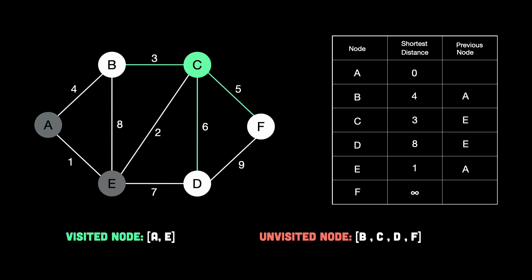C to B costs 3. So total equals 3, which is shortest distance to reach C, plus 3, which is equal to 6. But B is already at 4. 4 is smaller. So there's nothing to update here. Then C to D costs 6. So total is 3 plus 6, which is equal to 9. But D is already 8. So again, no updating the table.